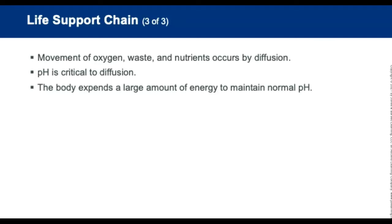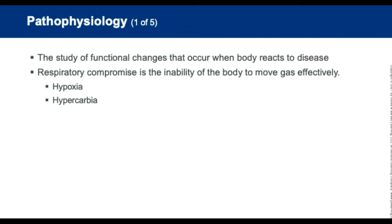Movement of oxygen, waste, and nutrients occurs by diffusion, and pH is critical to this process. The body expends large amounts of energy to maintain normal pH. Pathophysiology includes respiratory compromise — the inability to move gas effectively — which can lead to hypoxia, a decreased level of oxygen, or hypercarbia, elevated levels of carbon dioxide in the body.